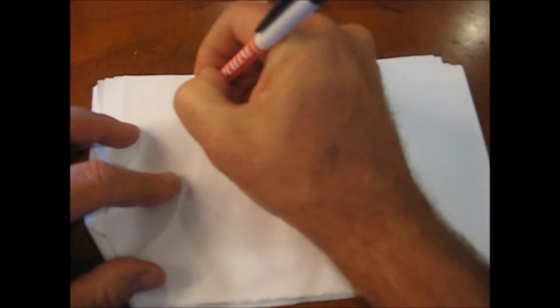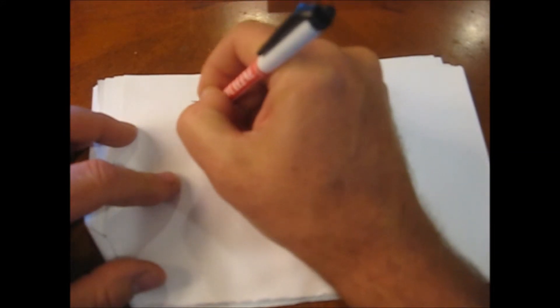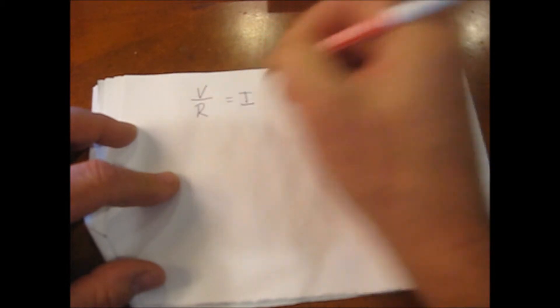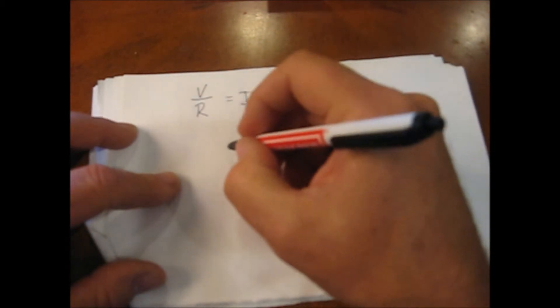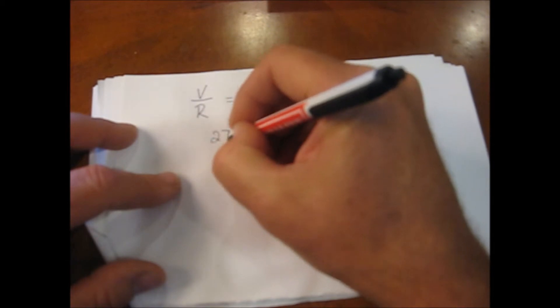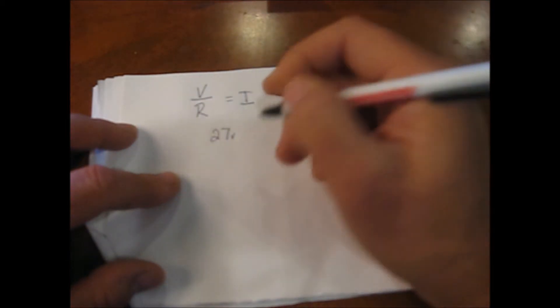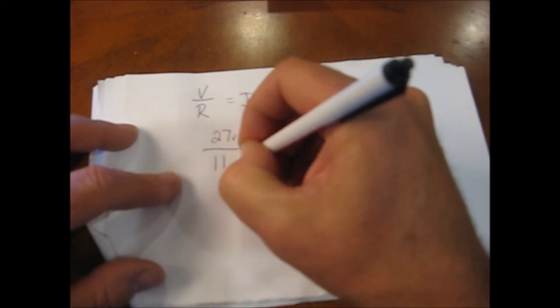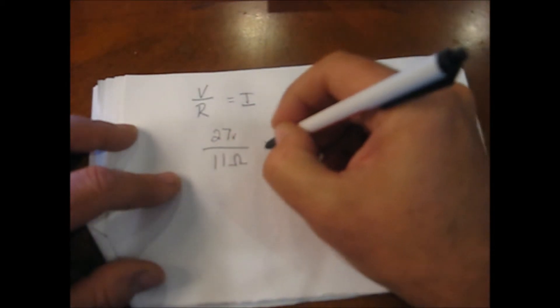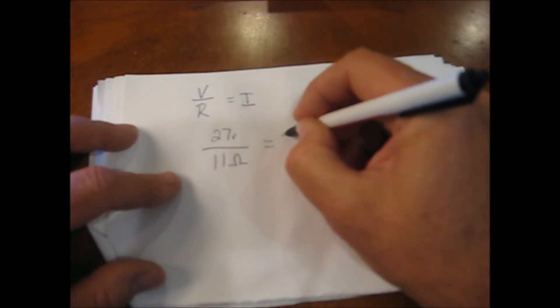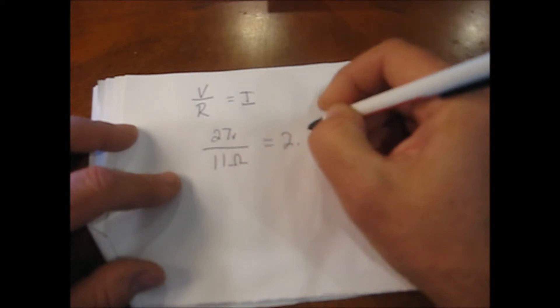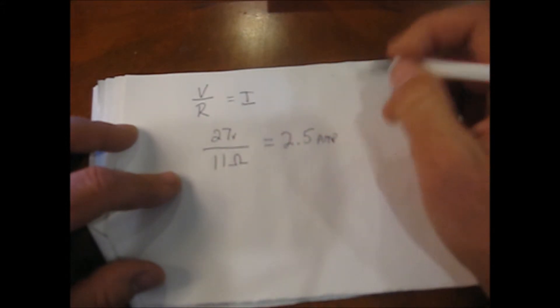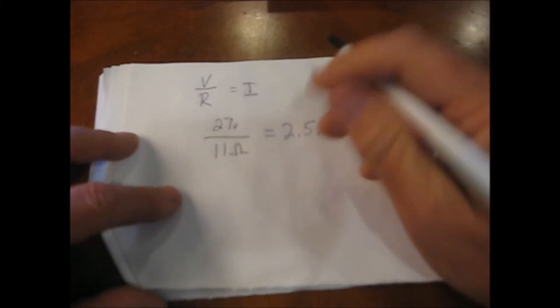So remember our equation: volts divided by resistance equals amps. Alright, so we had, let's say we have 27 volts on the system, which is sometimes normal. We had 11 ohms on that circuit. So we're looking at roughly 2.5 amps. That's pretty high. And that's why this contactor was not working too well.